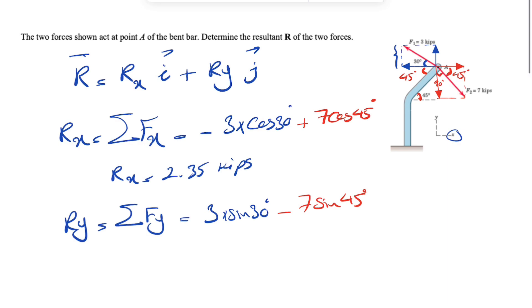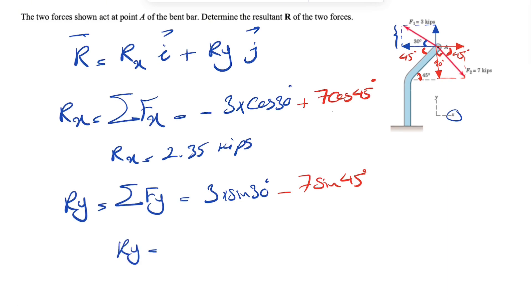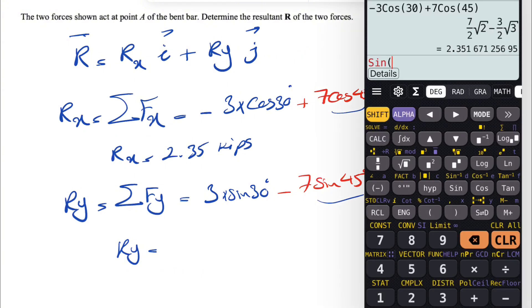So 7 sine of 45 degrees. For 45 degrees, the value of sine and cosine is the same. So even if we make a mistake for 45 degrees, it won't change the final answer. Let's calculate: 3 sine of 30 minus 7 sine of 45. This gives us minus 3.45 kips.